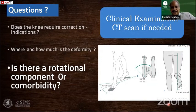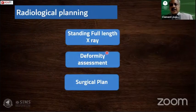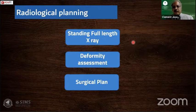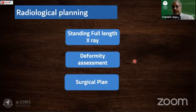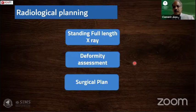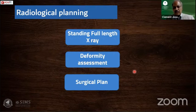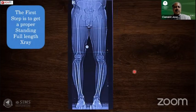Assessing rotational components in the valgus knee is much more important than when doing an osteotomy for a varus knee. Coming to radiological planning, which is the core of this talk, we go through three steps: first, get a proper full-length X-ray; second, do deformity assessment identifying whether the deformity is in the femur or tibia and how much closing-wedge correction is needed in millimeters; and third, your radiological planning should lead to surgical planning — what kind of osteotomy and implant to use, which Dr. Kumar will be covering.